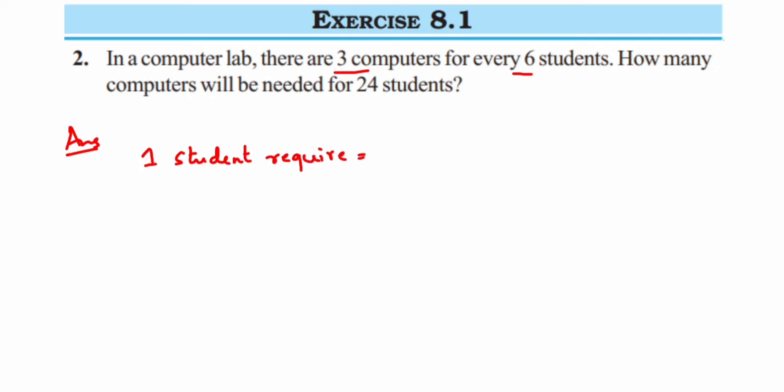3 upon 6 computers. Now why 3 upon 6? Why have I not written 6 upon 3? I'll explain. See here, they are asking us for one student, right? And there are six students and they have given three computers for every six students. So what you're calculating should come in the denominator. Here I'm calculating for six students, so six students should be written here in the denominator. This can be cancelled. You will get 1 upon 2, or you can just keep it like that without cancellation.